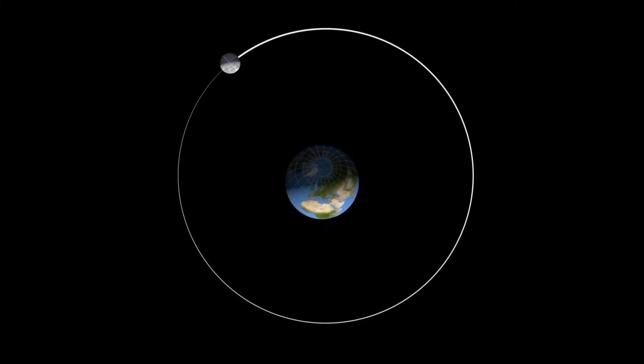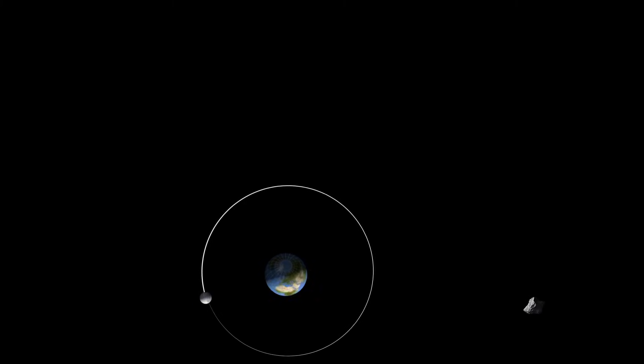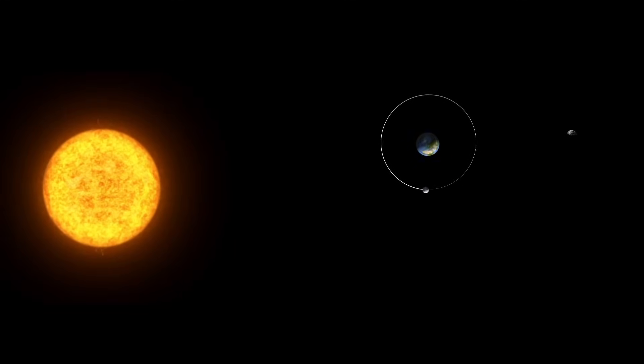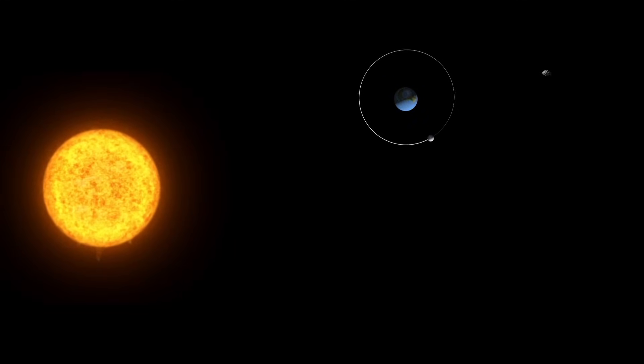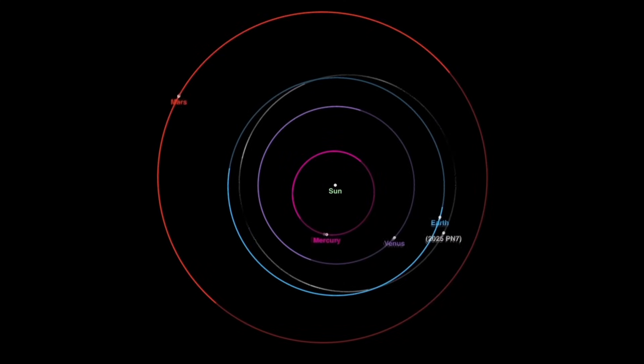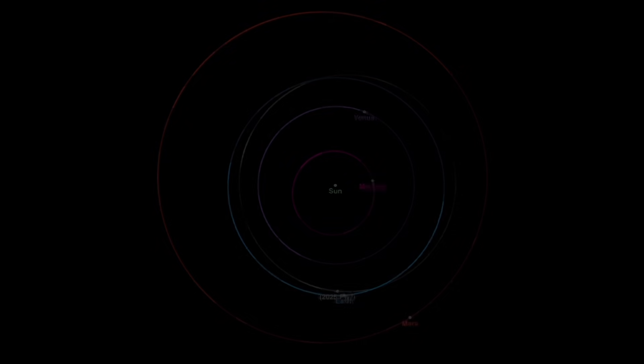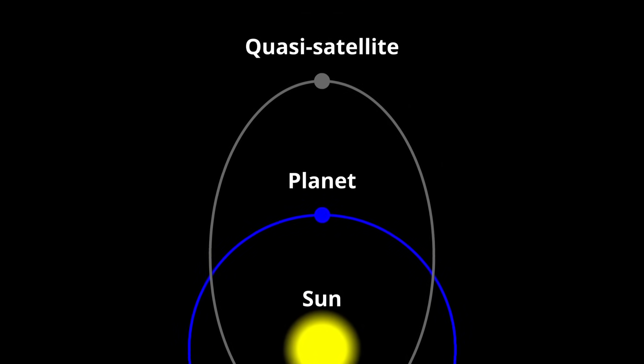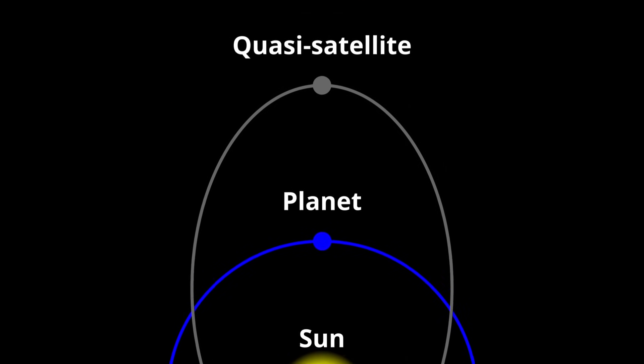But it is not a true Earth-moon like our familiar moon. It is not gravitationally bound to Earth. Instead, it is bound to the Sun just like Earth is. What makes it appear to pair up with Earth is that it orbits the Sun in almost exactly the same time Earth does, about one year, and it weaves around in a way that keeps it in Earth's neighborhood. This kind of arrangement is called a quasi-satellite or quasi-moon orbit.